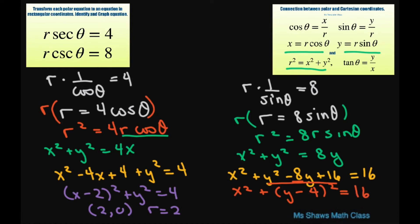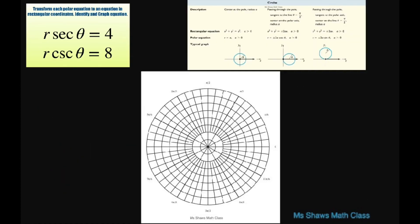That gives me my center is, I'm going to put it up here, 0 comma 4 with your radius is 4. Alright, so let's go ahead and graph these.